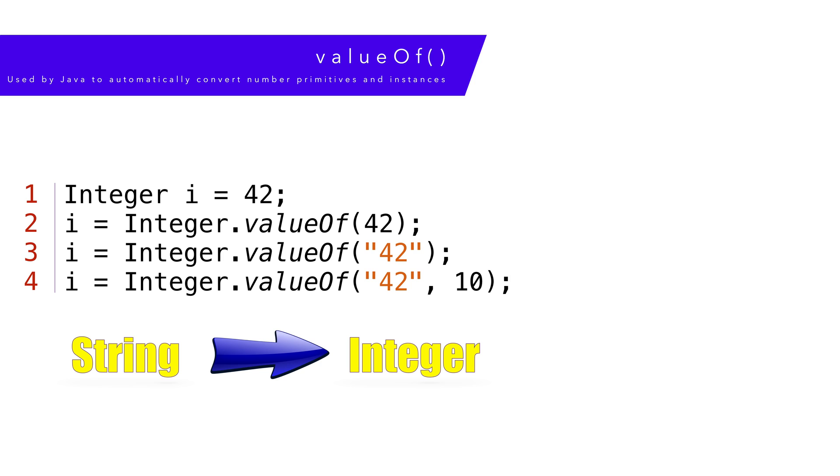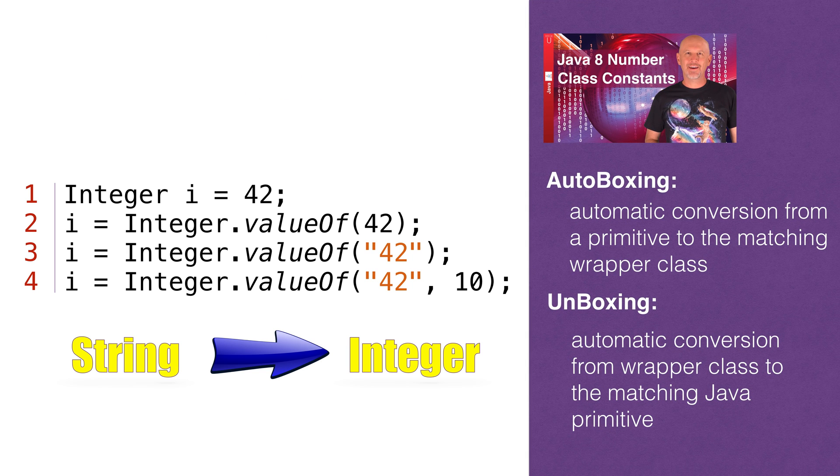valueOf is the main method used to convert primitives to Java number instances. valueOf is heavily used for autoboxing and unboxing. We covered valueOf in depth in the autoboxing unboxing video so we won't go into depth again. Every example here does the same thing: create an integer instance with the value 42. This is just the beginning of the Java number conversions available.